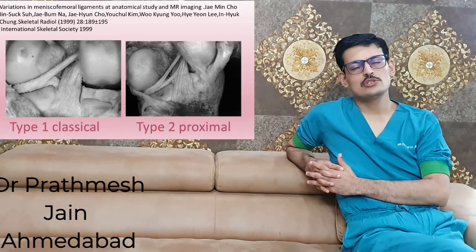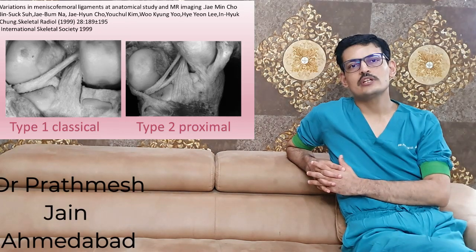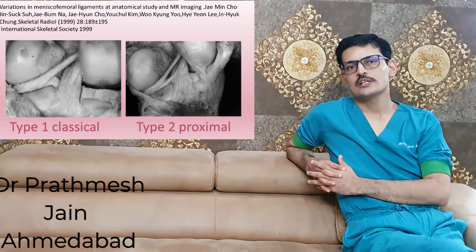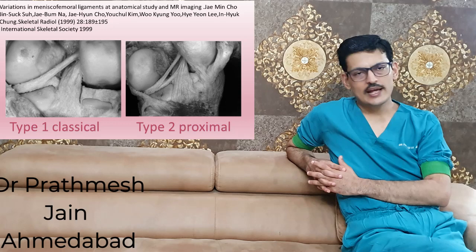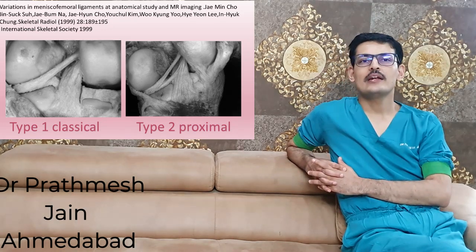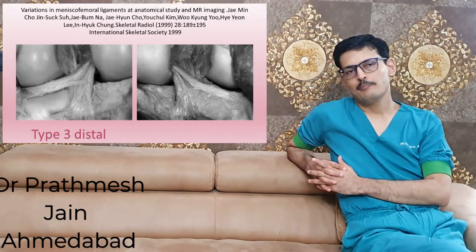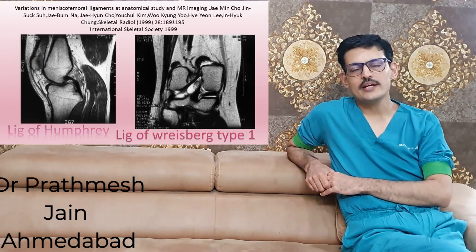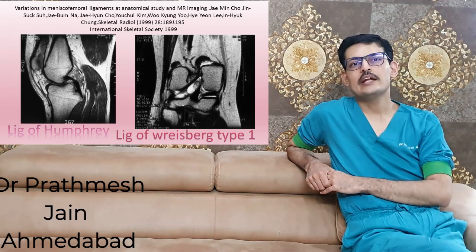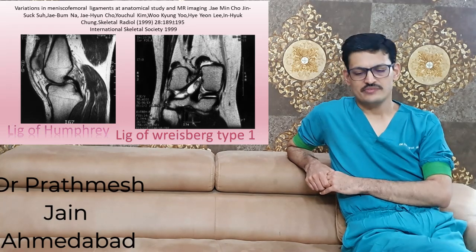There is a very notable study from Seoul, South Korea, in which the ligament of Wrisberg has been classified into three types. Type one, or the classical type, is the ligament attaching to the medial femoral condyle itself. Type two attaches to the proximal part of the PCL, and type three attaches to the distal part of the PCL. There can be other variations as well. It forms an important attachment to the PCL and also imparts a degree of stability to the PCL.